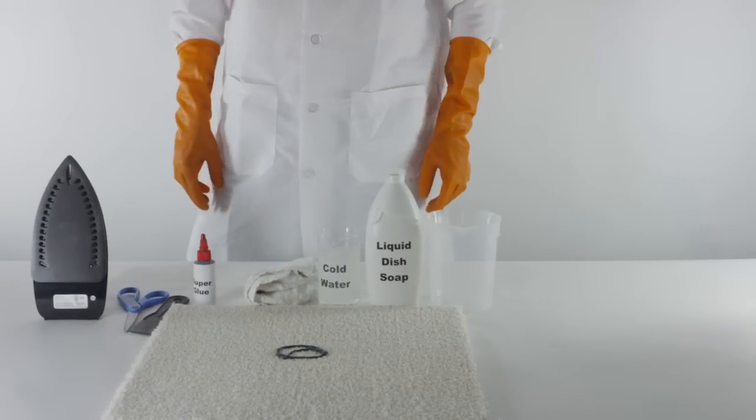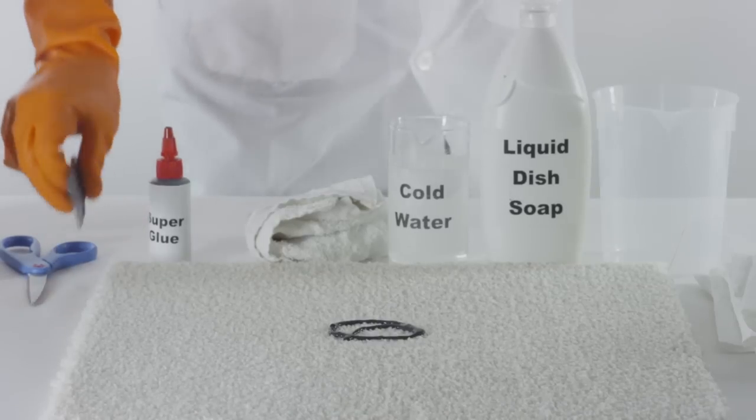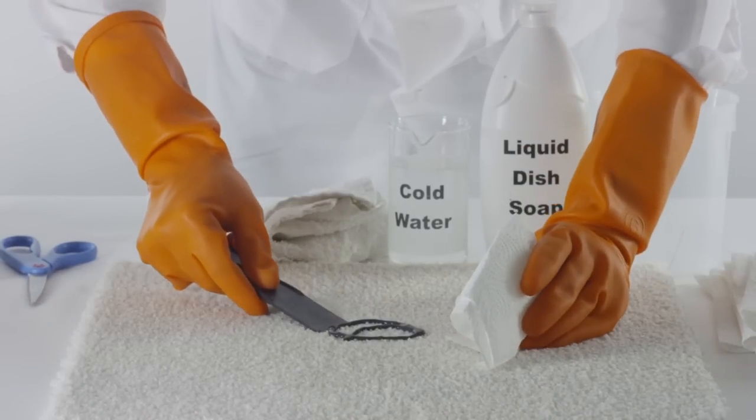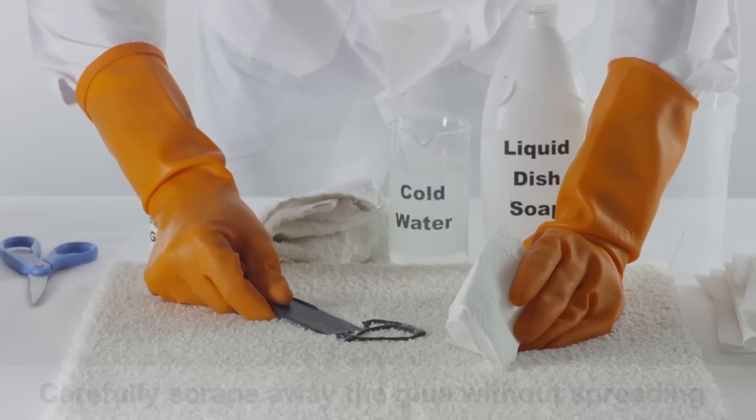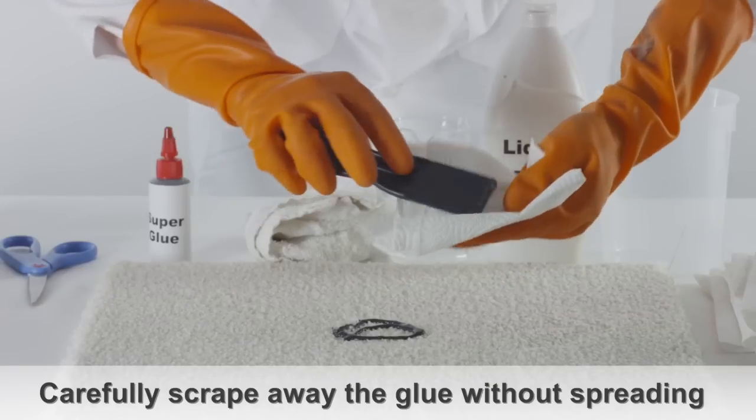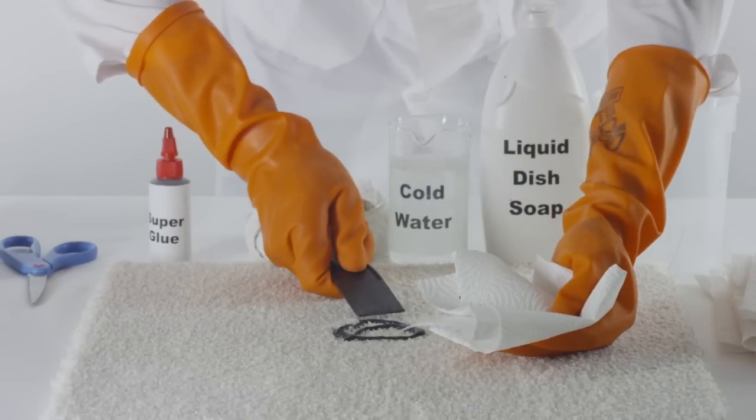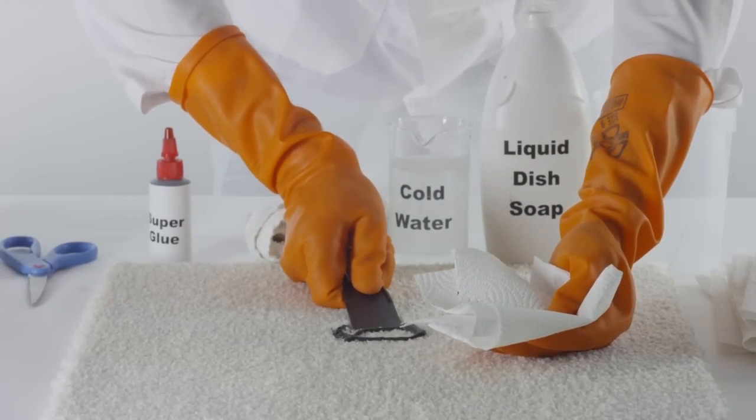How to get glue out of carpet. One of the most critical things you can do when trying to remove glue from carpet is act quickly. As soon as you discover the glue stain, be sure to take action as many kinds of glue are especially quick drying.